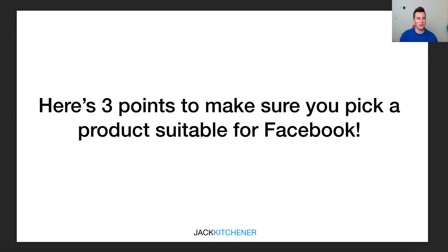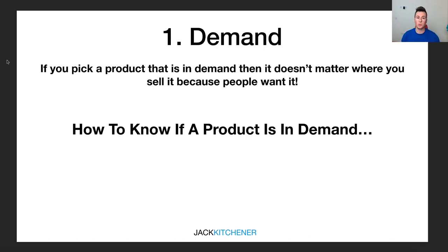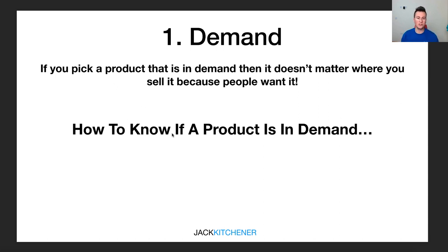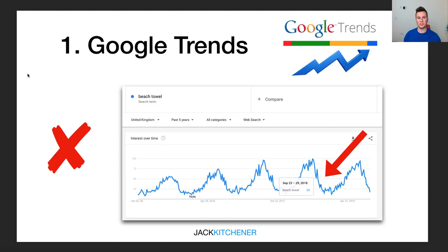So here are three points to make sure you pick a product suitable for Facebook. Number one is demand. If you pick a product that's currently in demand, it doesn't matter where you sell it — because if it's in demand, people are currently buying it and they want to buy it, so if they see it they will buy it. The number one go-to source to check demand is Google Trends — it's dead easy and simple to use.